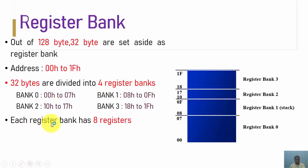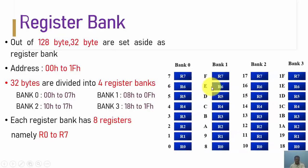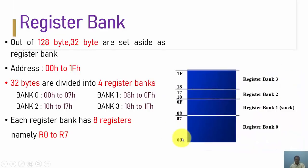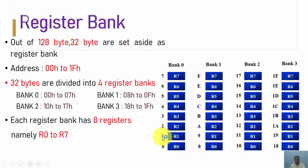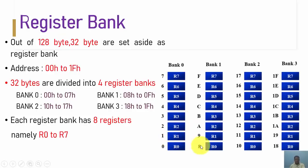Each register bank consists of 8 registers, named R0 to R7 as indicated here. Looking at the addresses from 00H to 07H in bank 0, we have locations 00, 01, 02, 03, 04, 05, 06, and 07 — from 00H to 07H, these 8 bytes are present. Each of these byte locations is one byte wide.